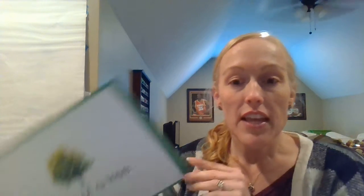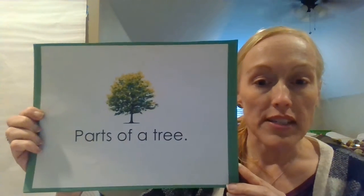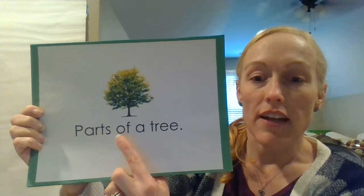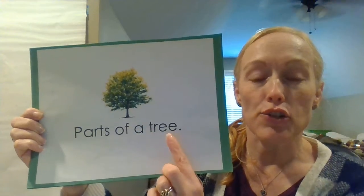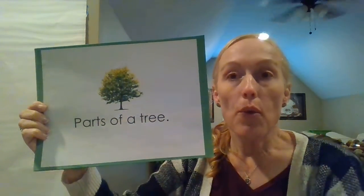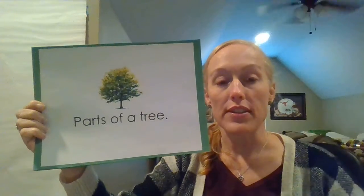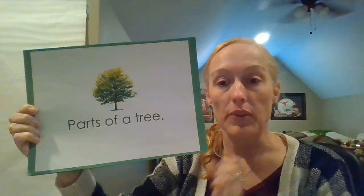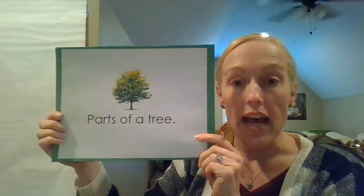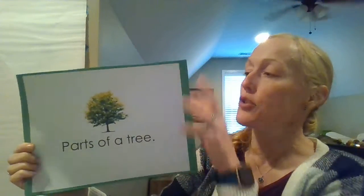This is an easy book that I think you might be able to read along with me. After you hear it one time, you may be able to go back and watch the video again and read it by yourself. This book is called Parts of a Tree. So we're going to learn about what parts a tree has. Just like you have parts of your body like your arms and your legs, a tree also has different parts.